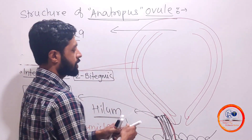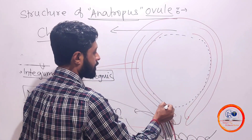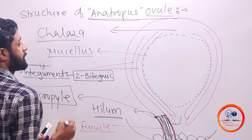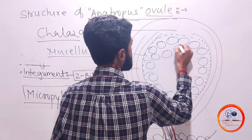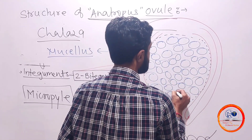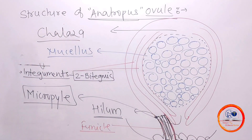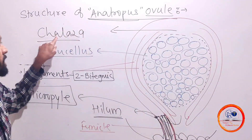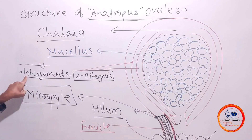Inside this integument, there will be entirely the presence of nucellus. The nucellus has diploid cells of quite large size. These diploid cells have nutritive substances, that's why we call it nucellus. The nucellus contains diploid cells and there is the presence of a diploid parent gamete cell which has nutritive tissue. The point from where the integument originates is the chalaza, and where the integument fails to unite is the micropyle.